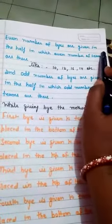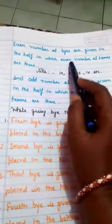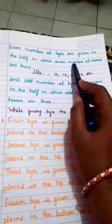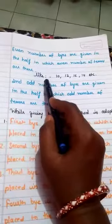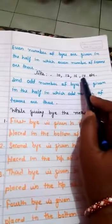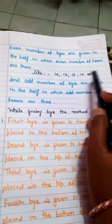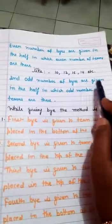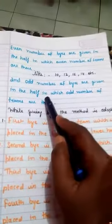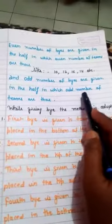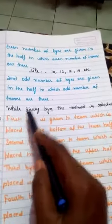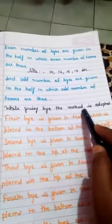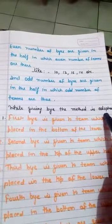Each even number of buys are given in the half in which there is an even number of teams — like 10, 12, 14, 16, etc. And odd number of buys are given in the half in which there is an odd number of teams, while this method is adopted.